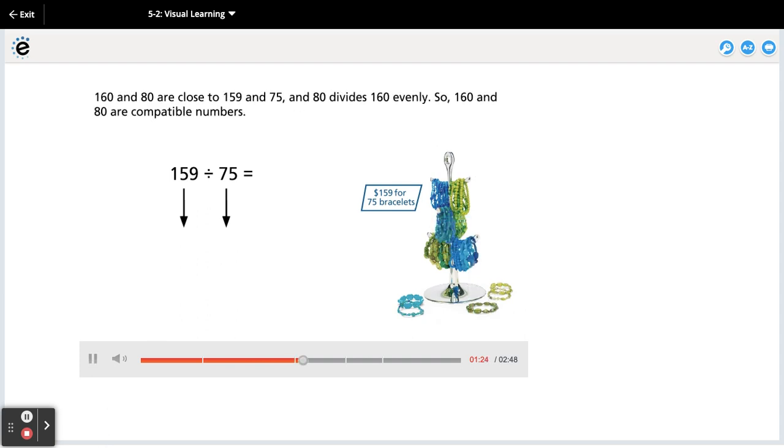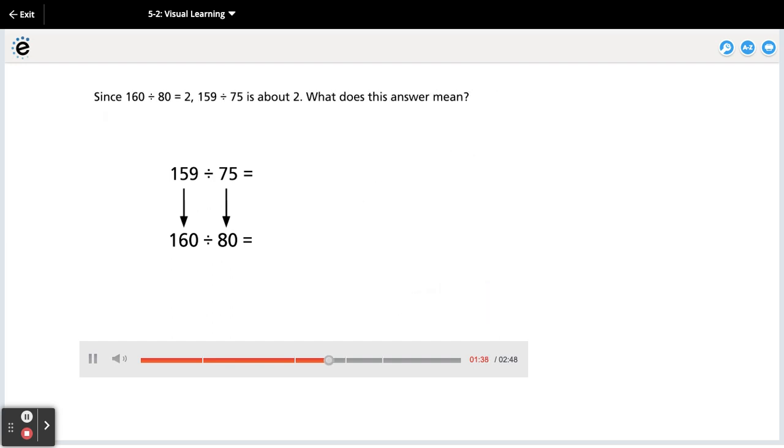160 and 80 are close to 159 and 75, and 80 divides 160 evenly. So 160 and 80 are compatible numbers. Since 160 divided by 80 equals 2, 159 divided by 75 is about 2.